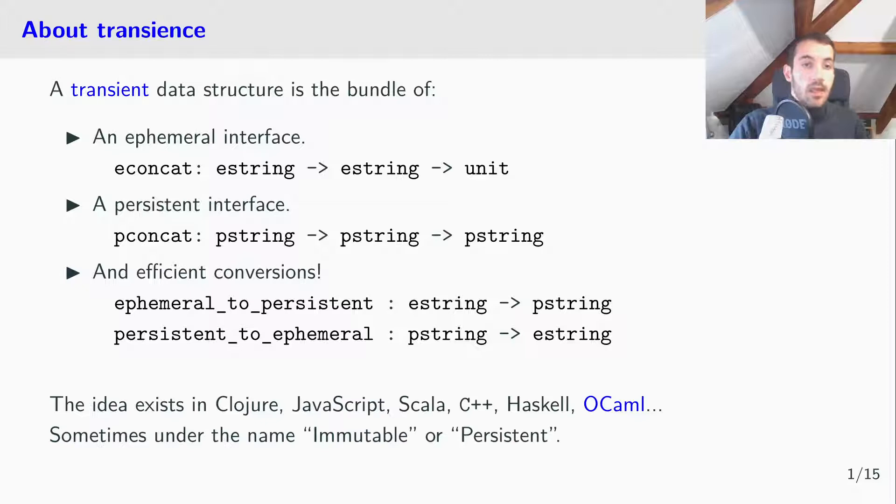The idea dates back to Clojure but is available in several languages such as JavaScript, Scala, C++, Scala or OCaml. But be warned, it is sometimes presented under the name of immutable or persistent.